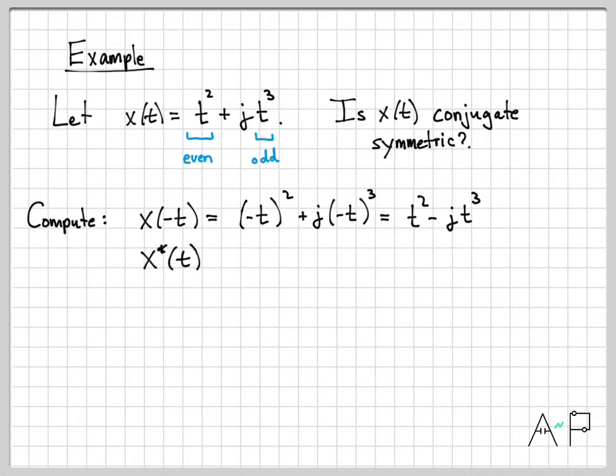Now let's compute the conjugate of the signal, which is pretty straightforward. There's that single j there that I need to turn to minus j. And then look at this. I can now compare the time reversed signal with the conjugate of the signal, and they are indeed equal. So this is a conjugate symmetric signal.